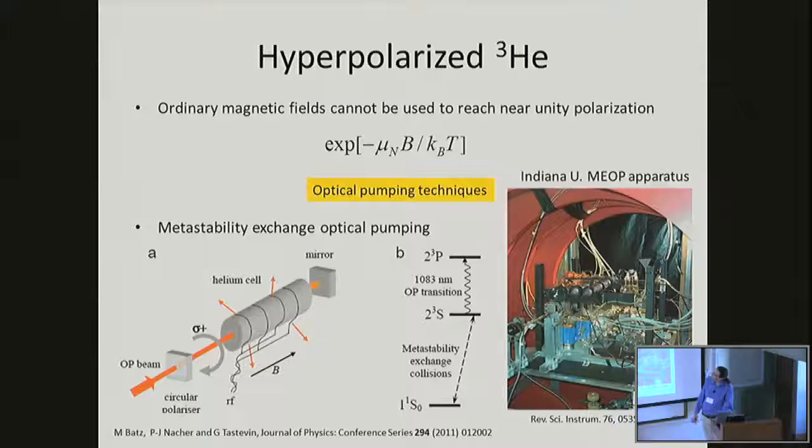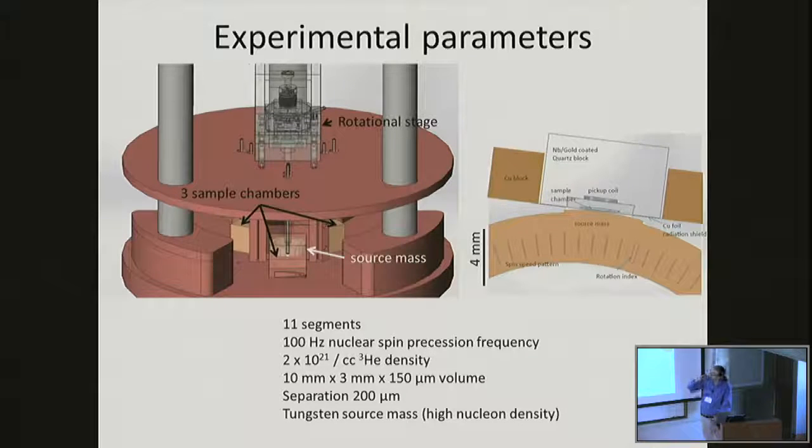The fundamental limit here is from the transverse quantum spin projection noise, which is going to go like one over the square root of the product of the volume density and T2 time of the helium-3. I have to go a little quick. I'm running out of time. Here's the apparatus in Indiana that we're using to polarize the helium. Here's a schematic of the cryostat, the guts of the cryostat. We have a rotation stage. We have the rotating source mass and three of these sensors positioned around it so that we can do correlation between the things. We have a separation of a couple hundred microns between this enclosure where the helium is and where the spinning mass is.